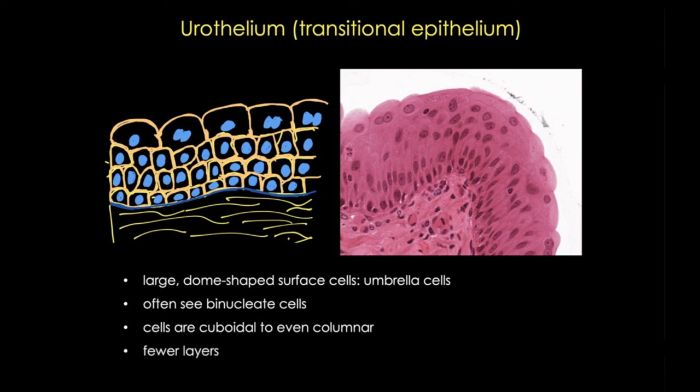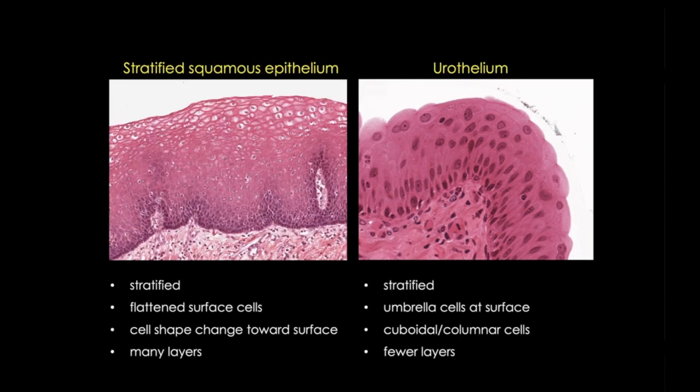Overall, urothelium will have fewer layers than stratified squamous epithelium, but the walls will become thicker the closer you get to the bladder. Urothelium is never keratinized. So let's recap and look at these tissues side by side. Both tissues are stratified, but their apical surface cells look very different — with those flattened thin cells in stratified squamous epithelia and the characteristic umbrella cells in urothelium.